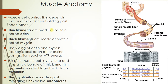We're going to start by looking at muscle anatomy to understand the structure of a muscle. Muscle cells contract, and contraction depends on thin and thick filaments sliding past each other. Muscles are long, striated, thin strands. Thin filaments, shown as yellow lines in this picture, are made up of a protein called actin. Thick filaments, represented by the purple lines, are made up of a protein called myosin.